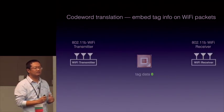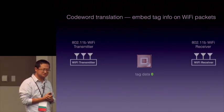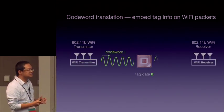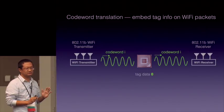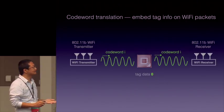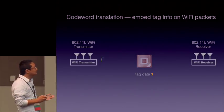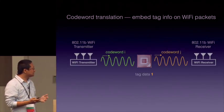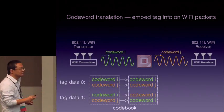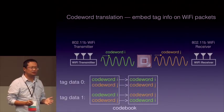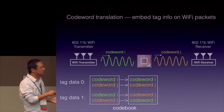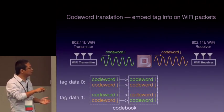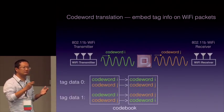Let's see how the tag can use this to encode information. If the tag wants to transmit data zero, it reflects the same codeword to the Wi-Fi receiver — it does not perform any codeword translation. When the tag wants to transmit data one, the backscatter codeword will be different from the incoming codeword. That's how the tag encodes information. In summary: if the tag transmits data zero, the backscatter signal codeword is exactly the same as the incoming codeword; if it transmits data one, it performs codeword translation, converting one codeword to another.